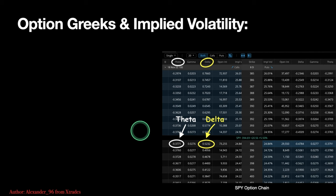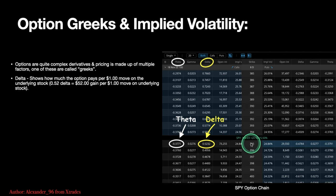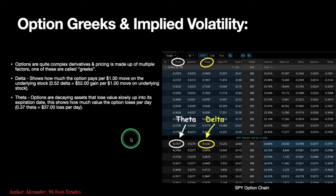Now we'll get into Greeks and implied volatility. Options are quite complex derivatives, and pricing is made up of multiple factors called Greeks — theta, gamma, delta. Delta shows how much the option pays per $1 move on the underlying stock. With a 0.52 delta, you're making about $52 per $1 move. Theta is everybody's worst nightmare — it shows how much value the option loses per day. With a 0.37 theta, you have a $37 loss per day.